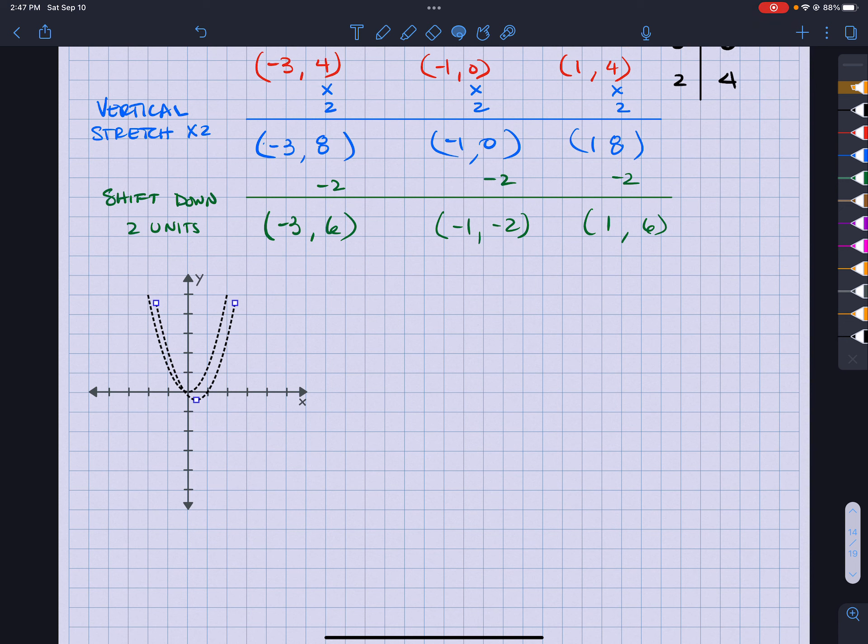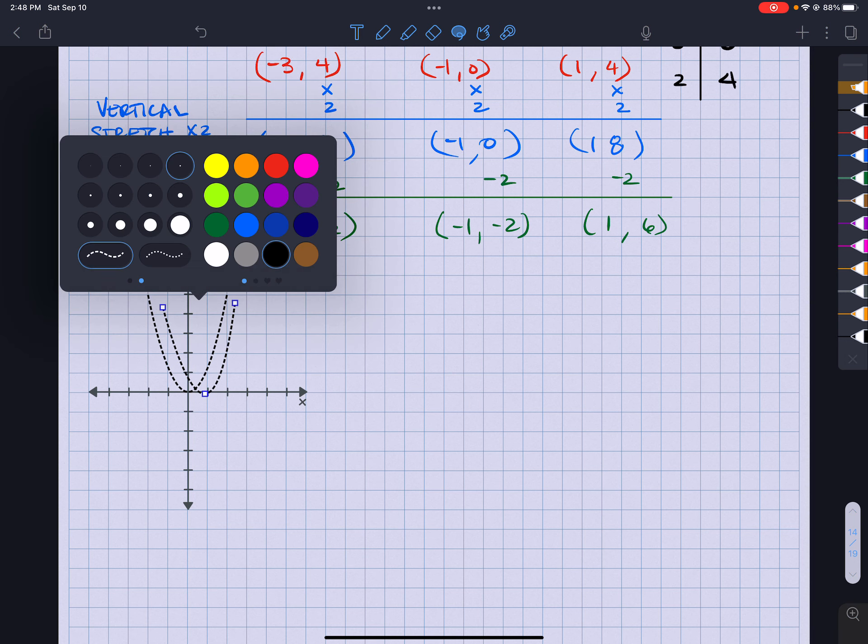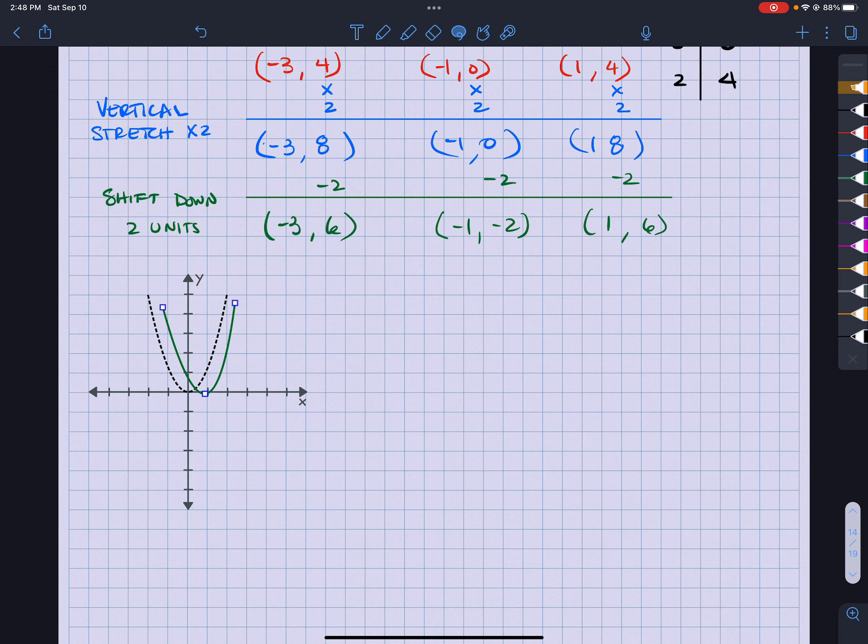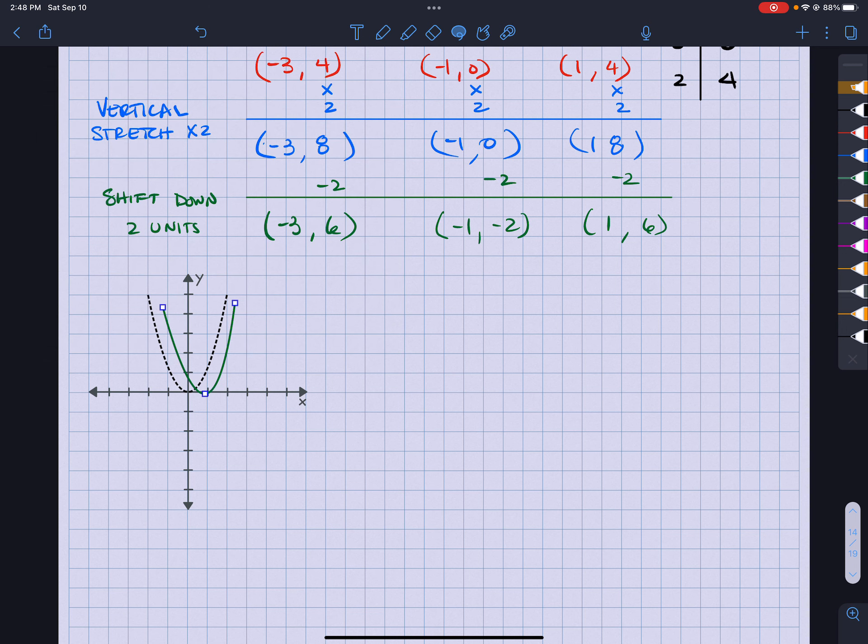So what happened to that? So my new points is going to be negative 3, 6. Actually, let me go ahead and change the style back to solid and green. Alright, so my new point is going to be negative 3, 6. So negative 3 is here, 6. And this is going to be 1, 6. So it's going to be right there. And it's going to be negative 1, negative 2. So it's going to be right there. So there is my final part right there. Okay.